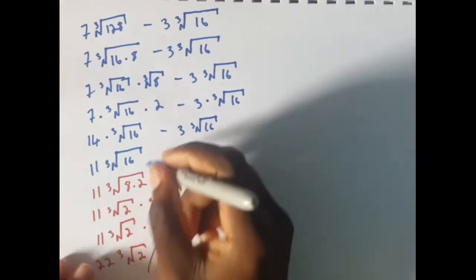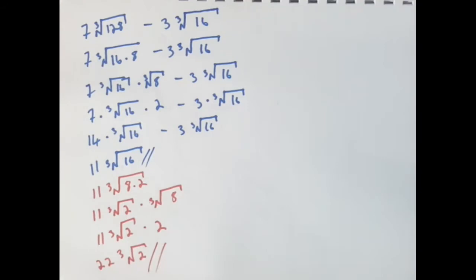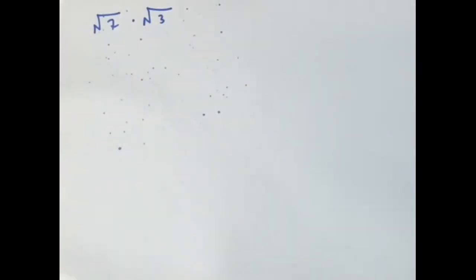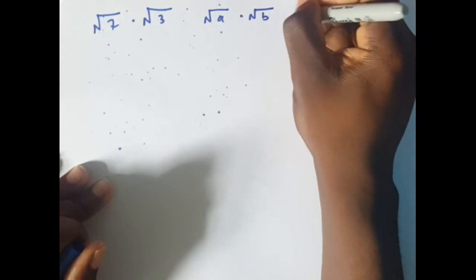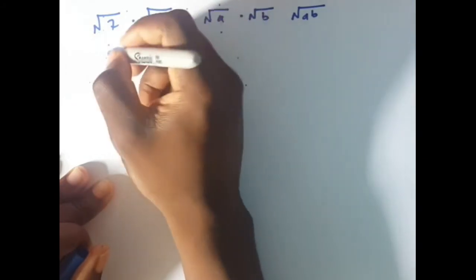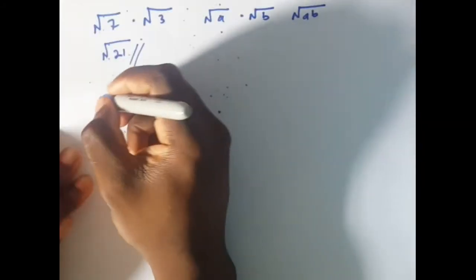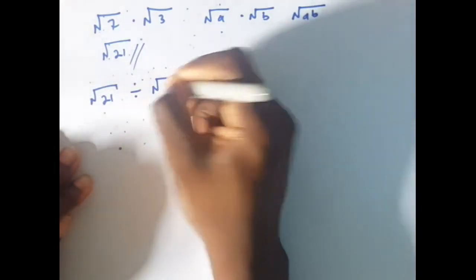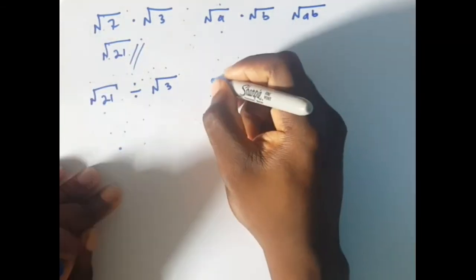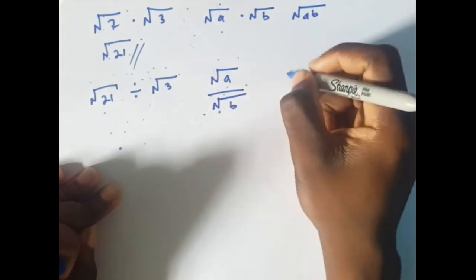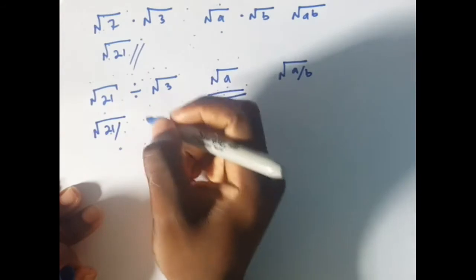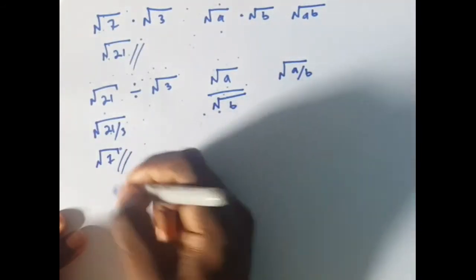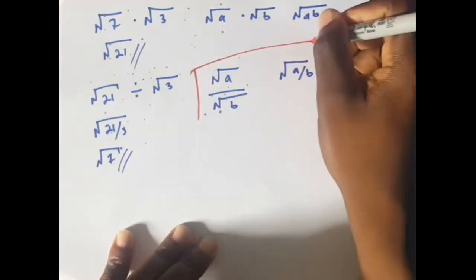Both intermediate and final answers are correct, but it's always best to carry your answer in its simplest form. Say you were given root 7 times root 3. Since root a times root b equals root ab, multiplying 7 by 3 gives root 21. And for root 21 divided by root 3: using the rule that root a over root b equals root of a over b, we get root of 21 over 3, which equals root 7. Please remember these rules as they are what you will use for simplifying.